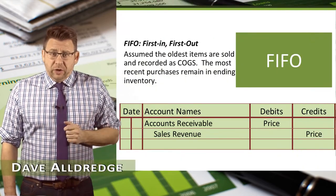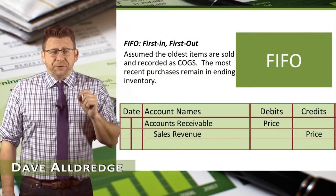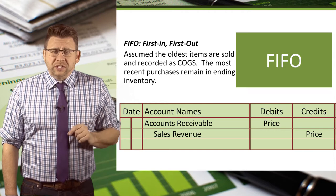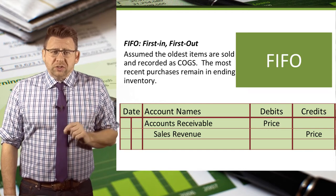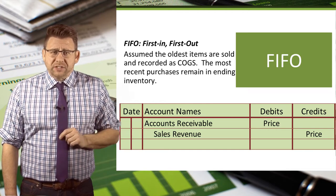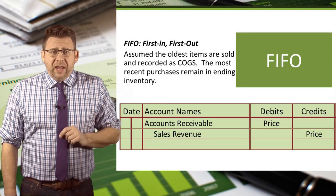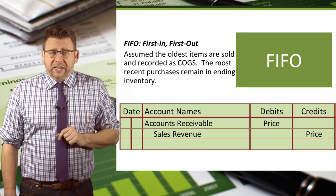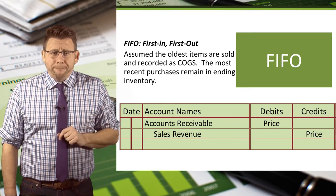FIFO inventory valuation, which stands for First In First Out, results in the oldest purchases being recorded as cost of goods sold and the most recent purchases remaining in ending inventory.